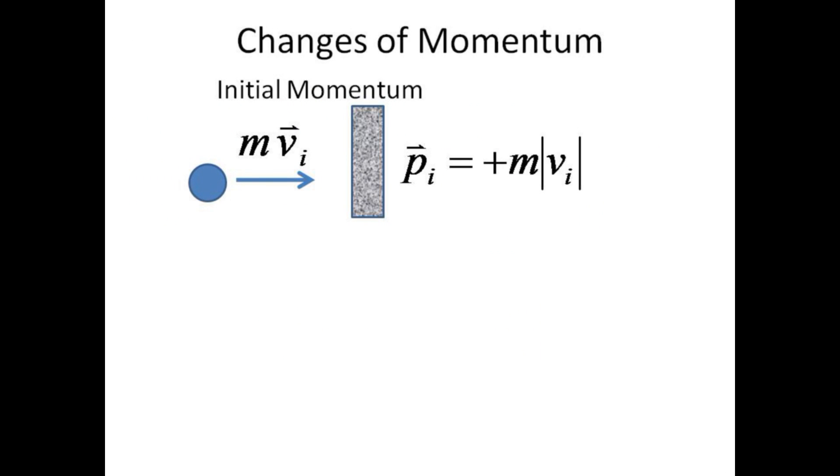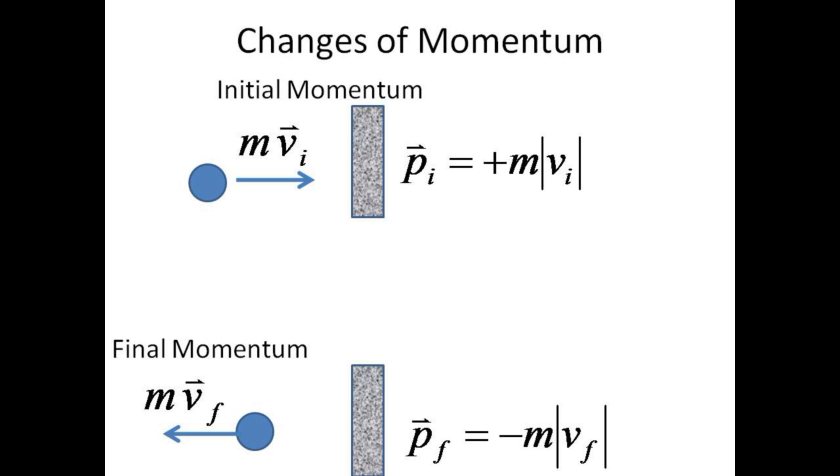In the first experiment of this lab, a massive object impacts a fairly solid object from the left and has its direction reversed. Before the collision, it has positive momentum. The absolute value around the velocity variable ensures a positive velocity. After the collision, the object has turned around and now has negative momentum.